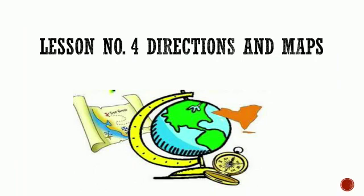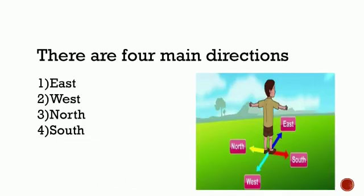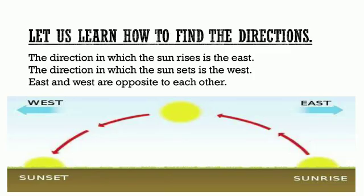Standard Third Subject EVS Chapter Number Four: Directions and Maps. There are four main directions: East, West, North and South. Let us learn how to find the directions. The sun rises every day. The direction in which the sun rises is the East. The direction in which the sun sets is the West. East and West are both opposite to each other.